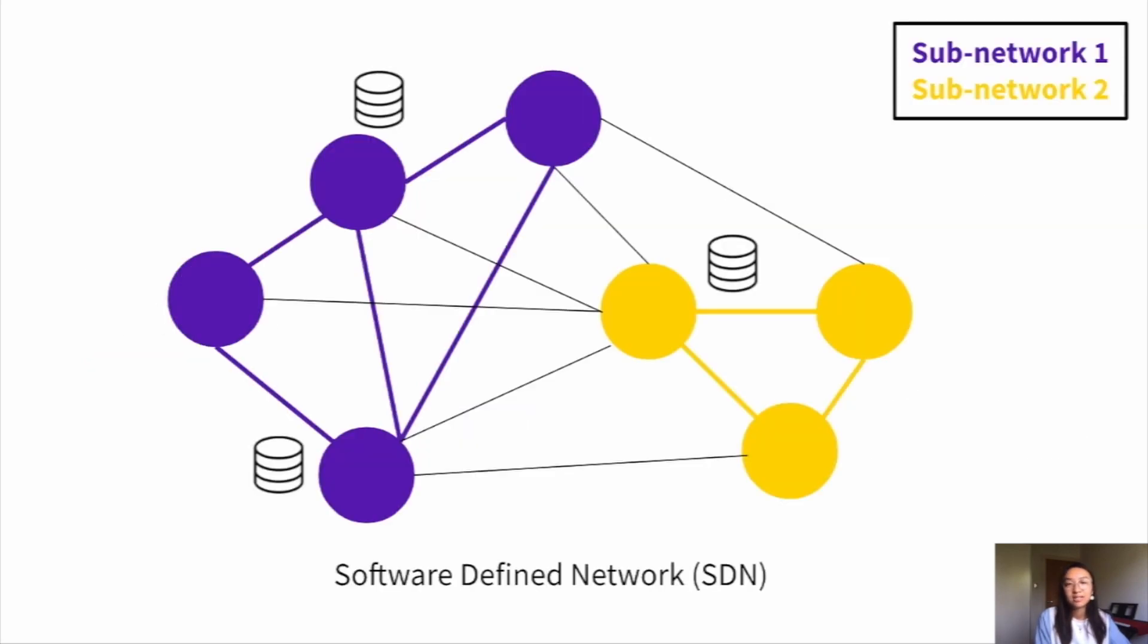Going back to our SDN example, each node may be associated with a specific subnetwork as shown in this diagram. This means that most of our interactions occur within each subnetwork instead of between the different subnetworks.